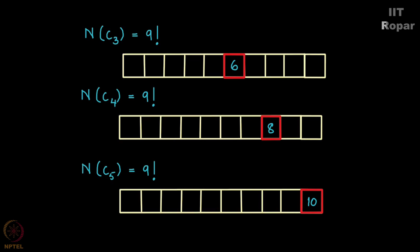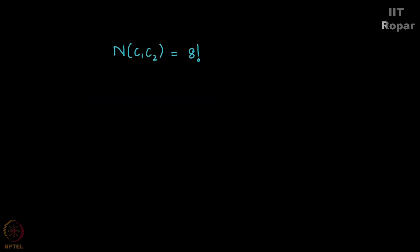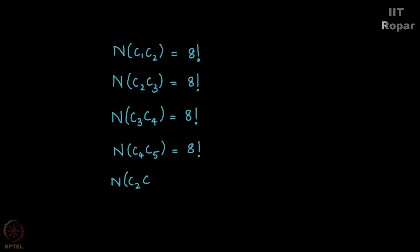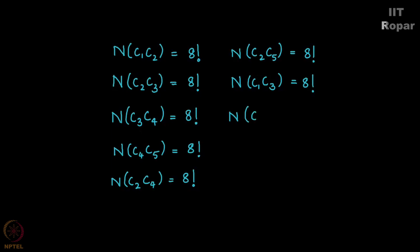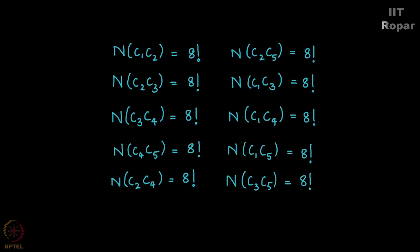Now let us see what is N(C1 ∩ C2). It happens to be 8!. N(C1 ∩ C2) represents those permutations where 2 is in its own position as well as 4 is in its own position — so these 2 are fixed. How many integers are free then? 8. Hence the number of ways to arrange 8 integers is 8!. This holds true for all pairwise conditions: N(C2 ∩ C3), N(C3 ∩ C4), and so on — all of them will be 8!.